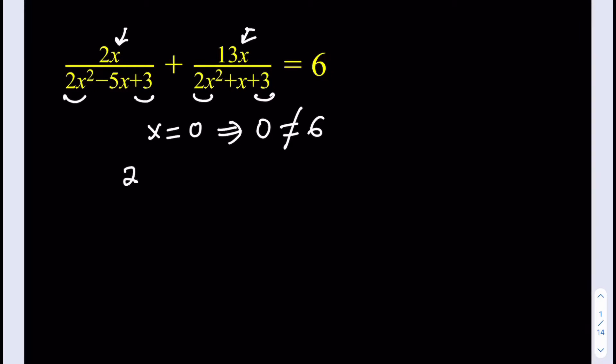If I divide the numerator by x, I'm going to be getting 2 from here. And at the bottom, I'm going to be getting 2x minus 5 plus 3 over x. And the other one is going to give me 13 divided by 2x plus 1 plus 3 over x. And obviously, the right-hand side is going to stay the same.